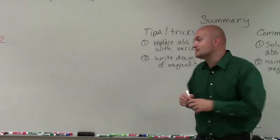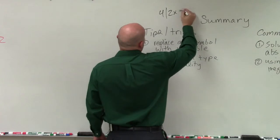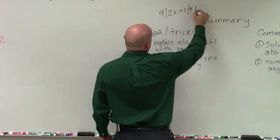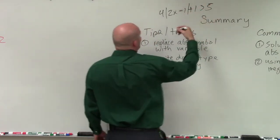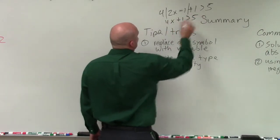So a lot of times I just say replace that with x. If you have 4 times the absolute value of 2x minus 1, plus 1 is greater than 5, rewrite that with a variable.